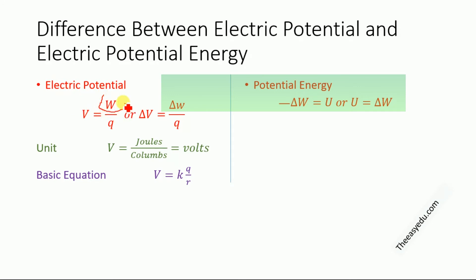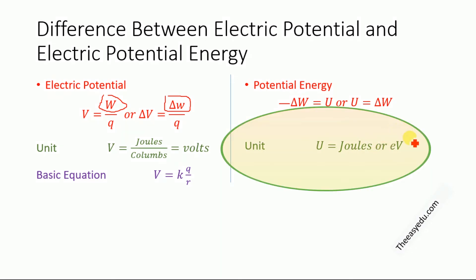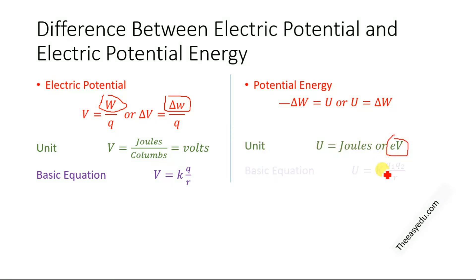If we look at electric potential, the work done W, or change in work, is actually the potential energy. The unit of energy is joules, so the unit for electrical potential energy is also joules. In current and electricity we can also use the unit electron volt for energy. The basic equation for electrical potential energy is denoted by U and equals kq1q2/r.